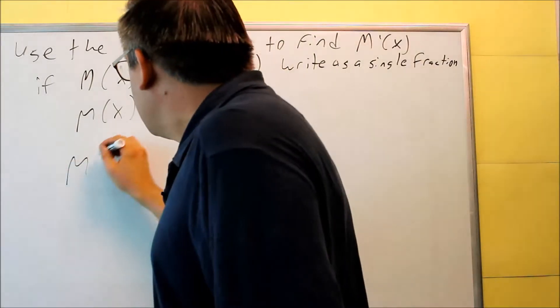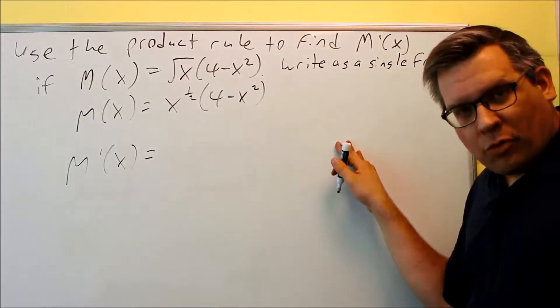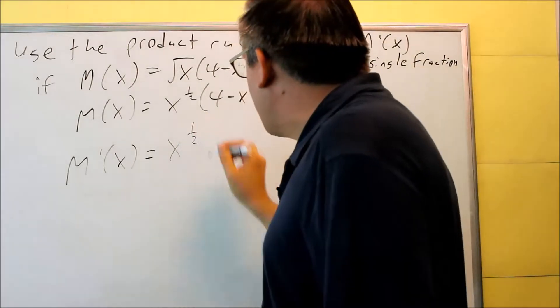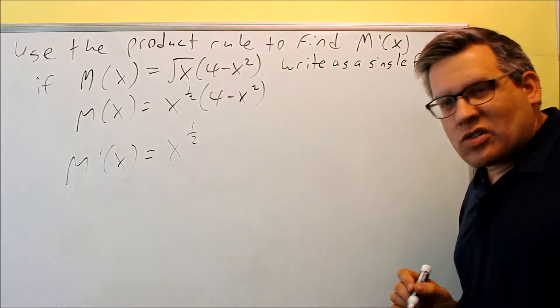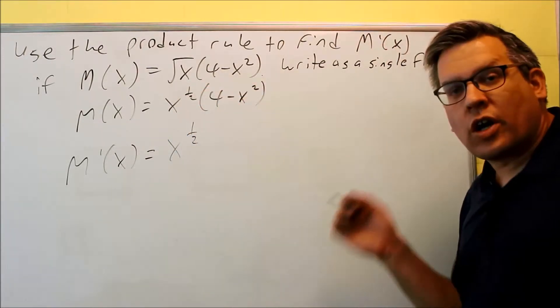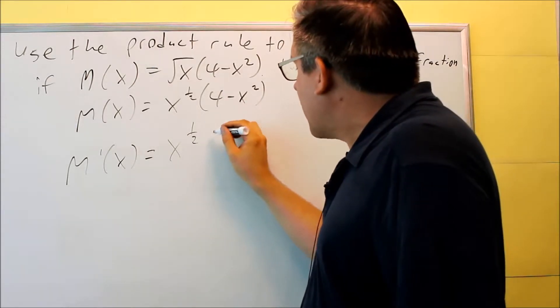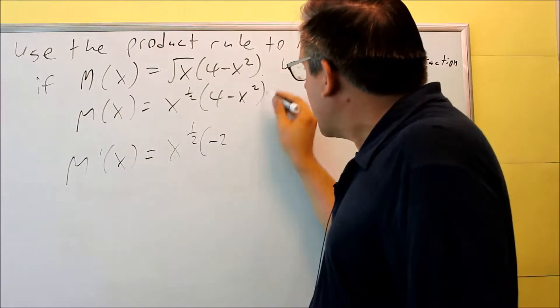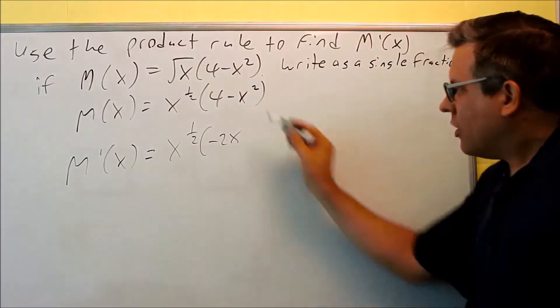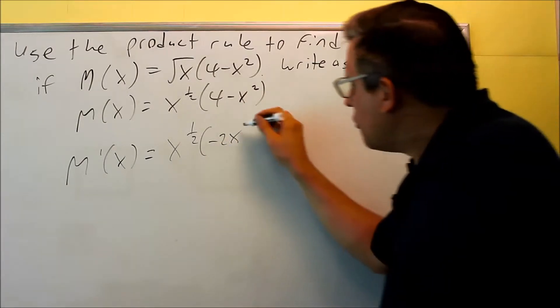Okay, so let's do m-primed, and we're going to be following the product rule formula for that. So that's the first thing, derivative of the second we'll start with. So first thing is x to the one-half, derivative of the second. This first part is our f, the second part is our g, so we want g-primed. Doing that rule, I have a negative, it's going to come down, negative two comes down, and then I have x, then tract one, and you get one. Minus sign came down with it, we brought the two down in front of it, so negative two x would be that derivative.